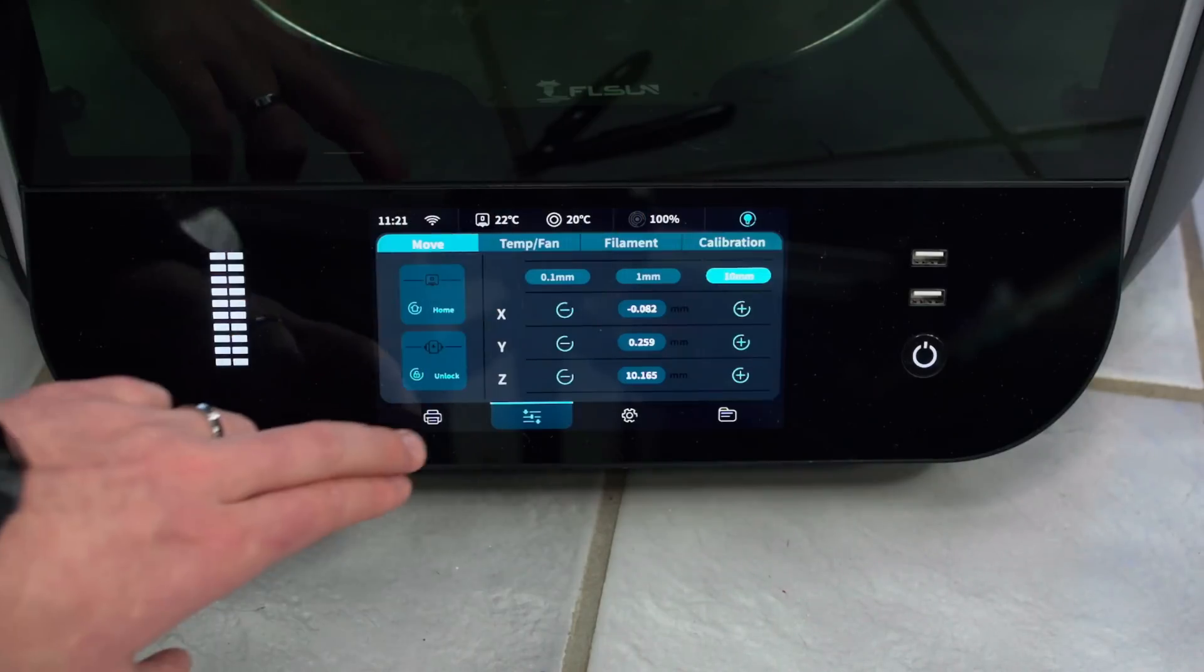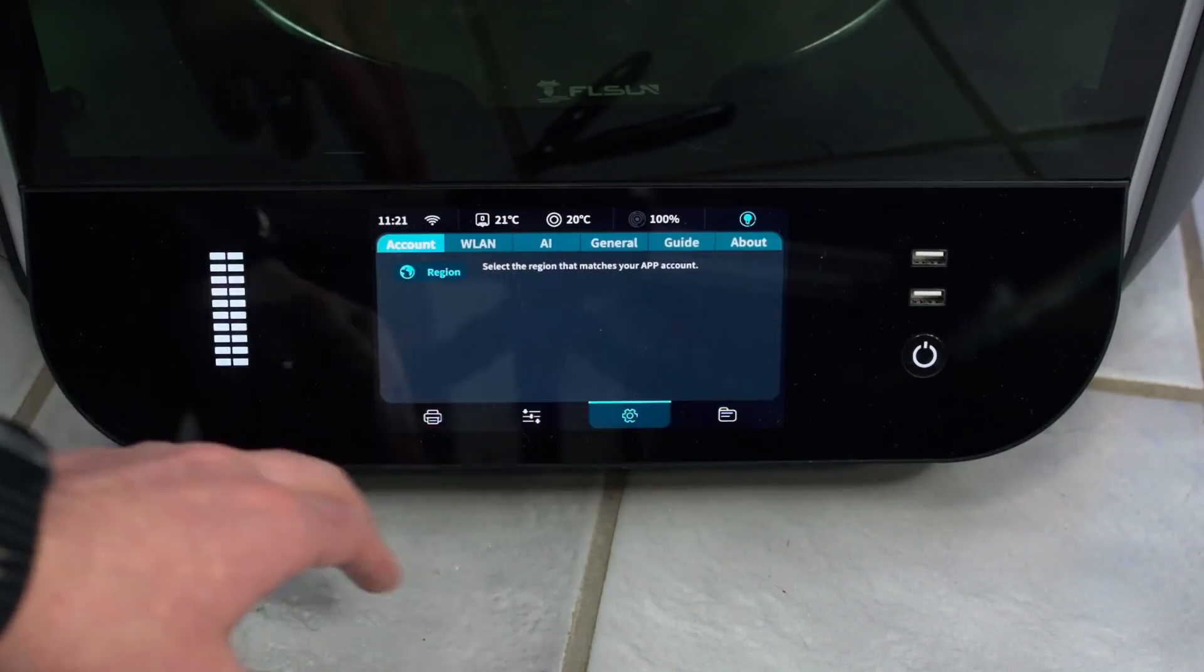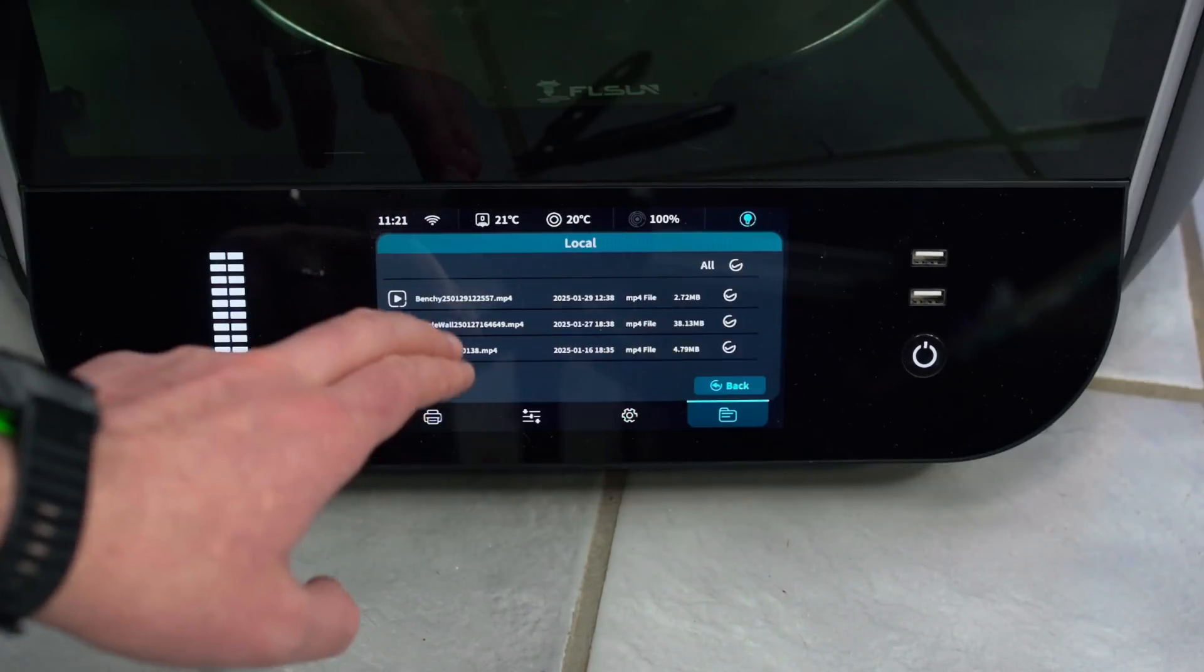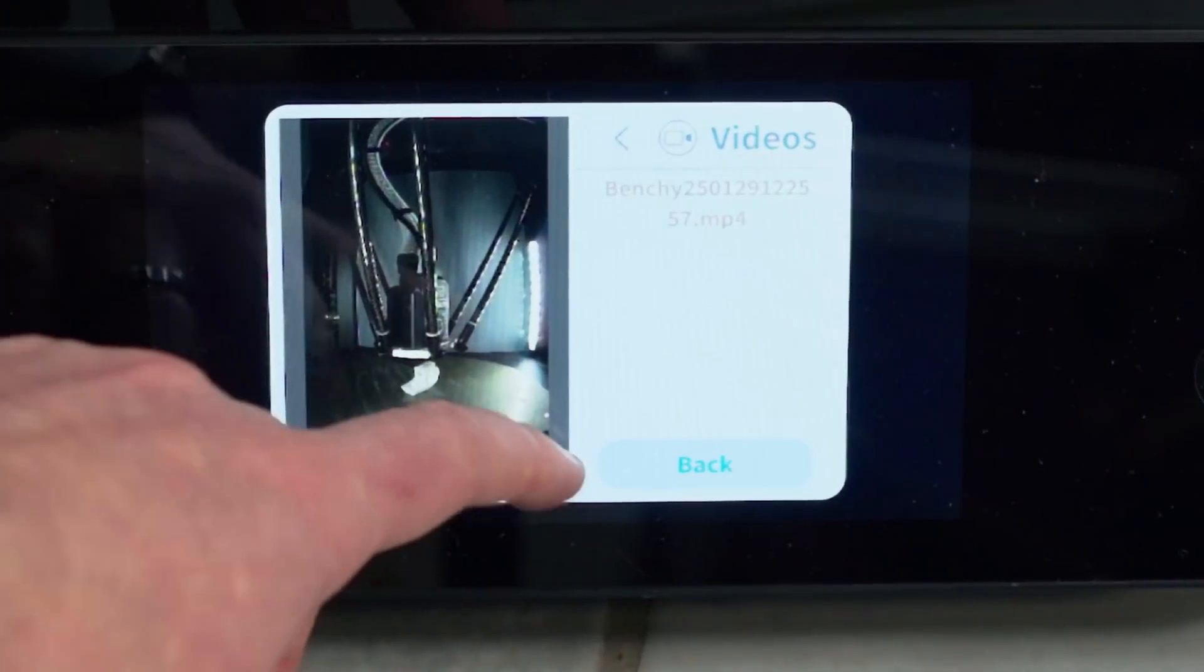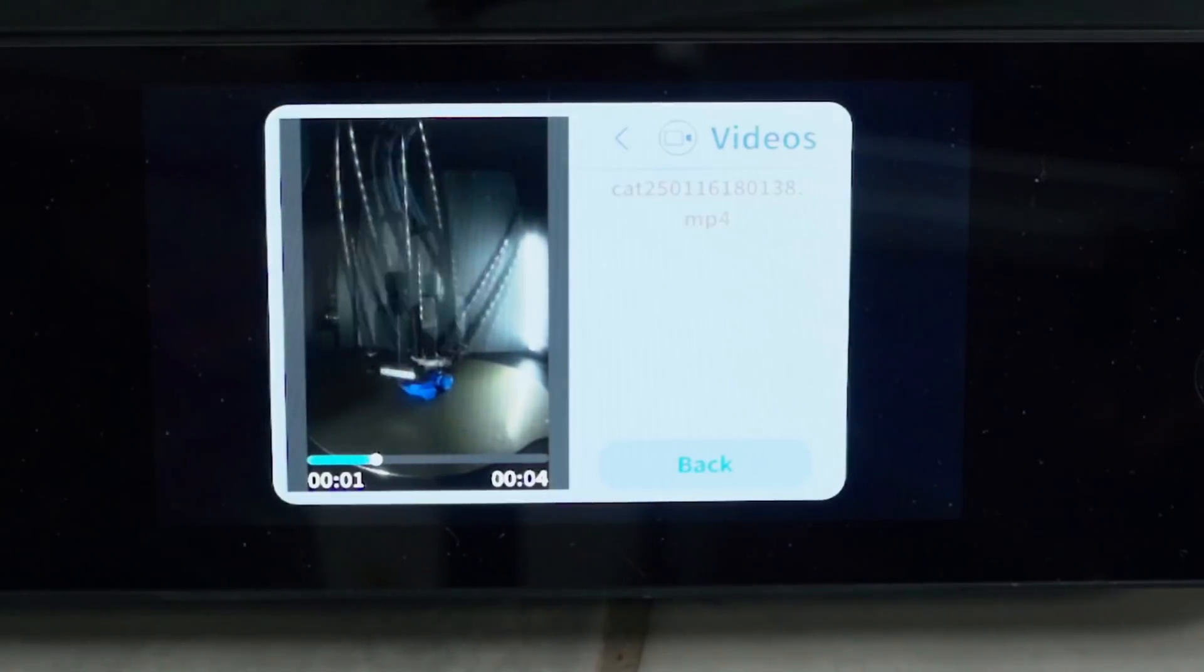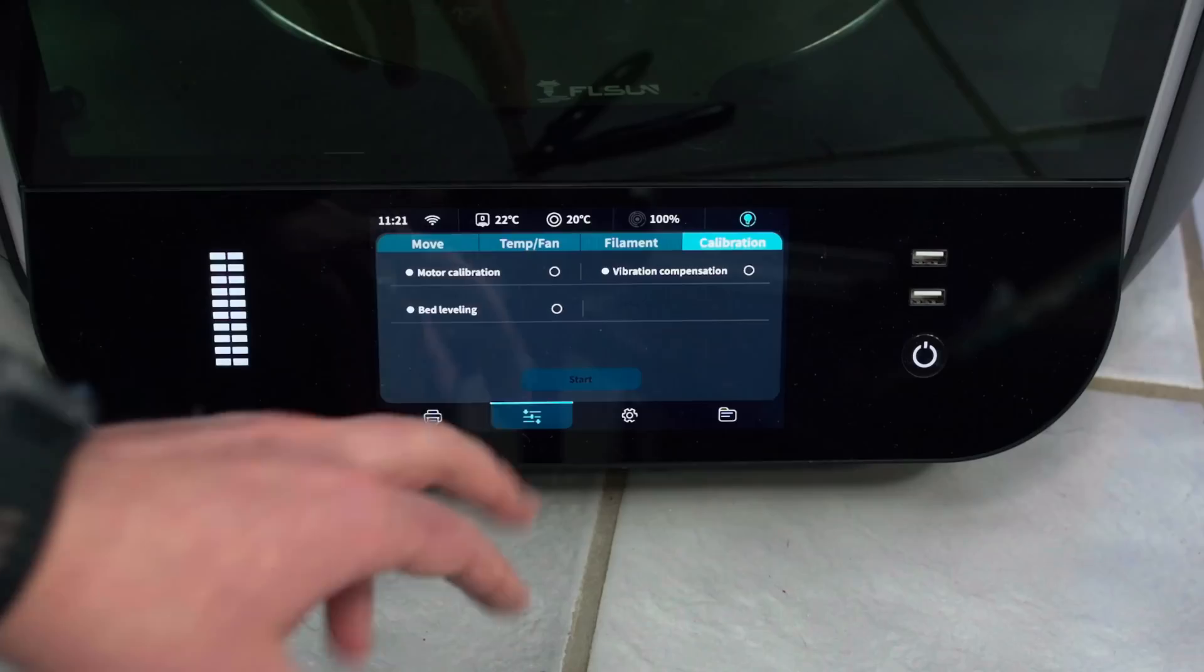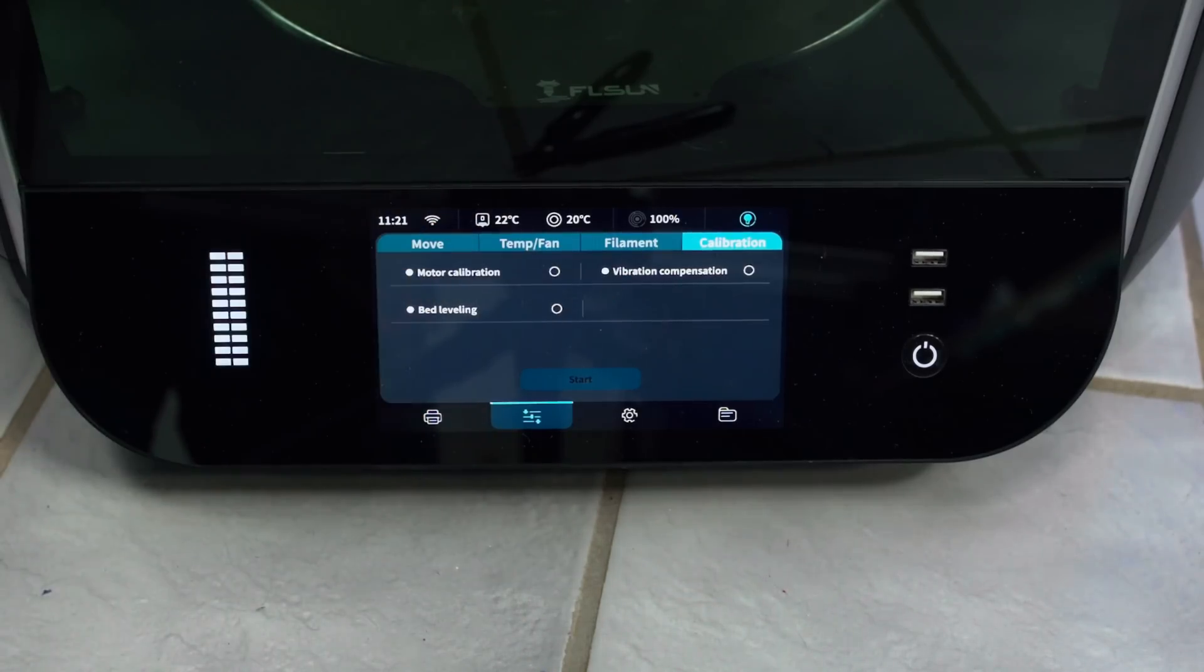It's easy to navigate around here on the menu, find which prints you want to start, change your settings, look up old videos, and you can fully watch back your time lapses right on the front of the printer. This is something you can't do on most 3D printers. It comes with all of the calibration here, from motor calibration, bed leveling, vibration compensation.